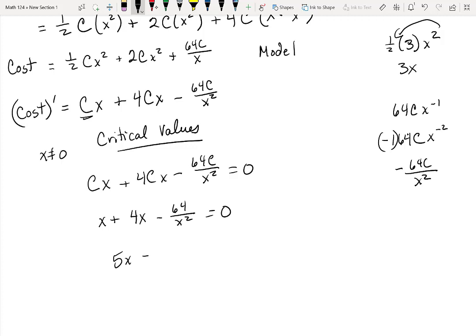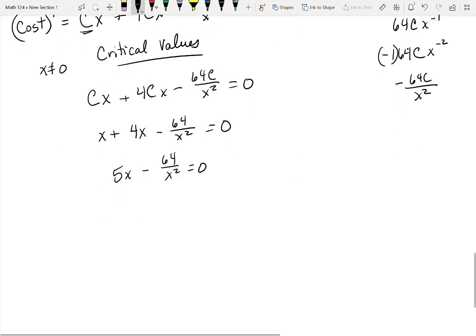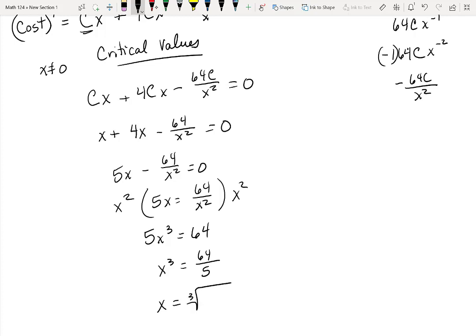I might do 5x minus 64 over x squared is equal to 0. I'll move this 64 over x squared and multiply everywhere by x squared. So I'll get 5x cubed is equal to 64. x cubed is equal to 64 over 5. And x should be the cube root of 64 over 5.